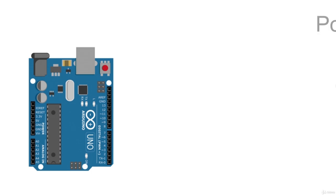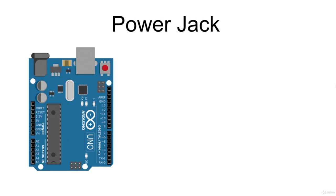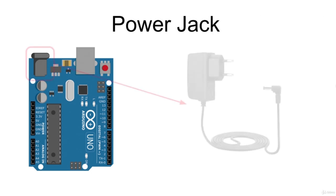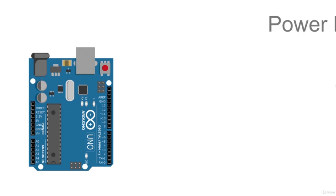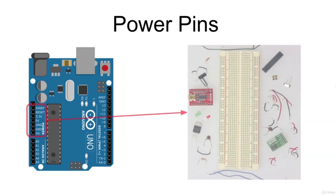The power jack allows Arduino boards to be powered directly using a 9V power supply in order to have stand-alone applications without using the USB cable. The power pins give stable supply voltages that can be used for your project. Most components used with Arduino work with 5V or 3.3V, and these pins can be used to give them power.